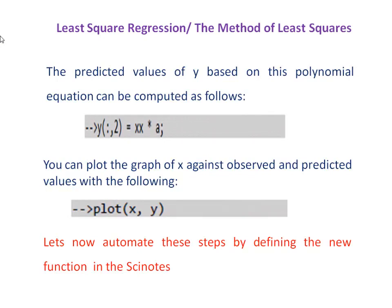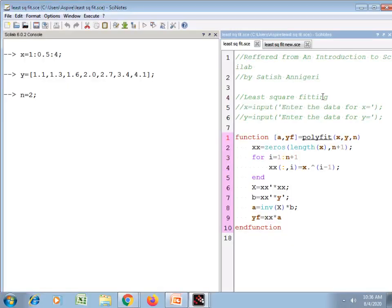The predicted values of y based on the polynomial equation can be computed as y(:,2) = xx * a. You can also plot the graph of x against observed and predicted values using the plot command. We can automate these steps by defining a new function in Scilab. Here is the program to fit experimental data to a given degree of polynomial — the function polyfit will give the values of y that best fit the observed values.